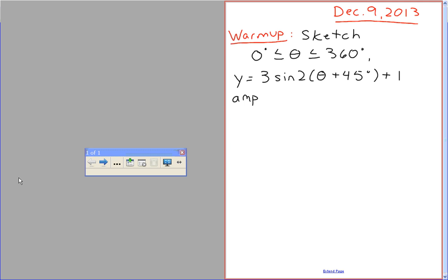Okay, so I'm going to write on the board just like how it'll look on your class. It'll say amp, axis, period, action points, shift, and sine starts at.